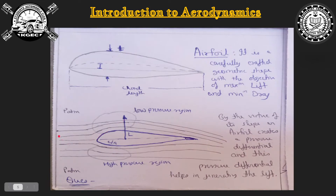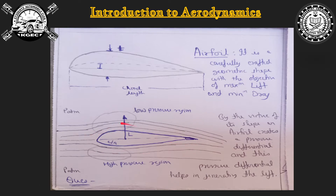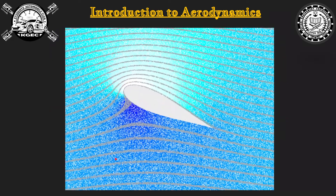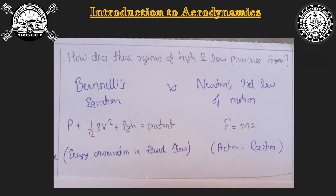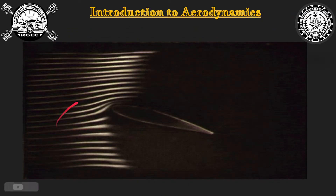The assumption in Bernoulli's equation is that the air particle at the top surface and the bottom surface meet at the end at the same time. Since the top surface air particle covers a larger distance, it must speed up, and while speeding up, velocity increases and pressure decreases. But this assumption itself is wrong.